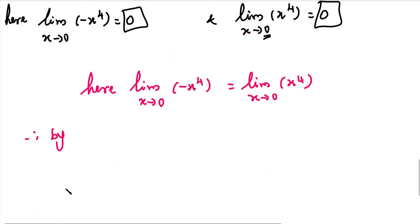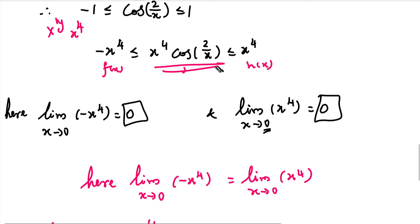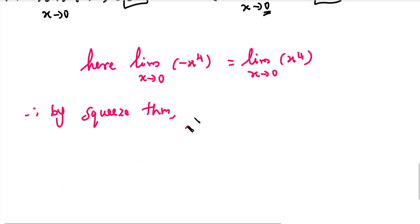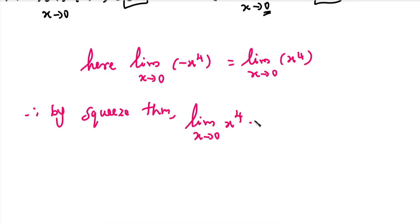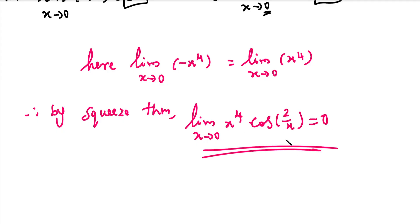Therefore, by the Squeeze Theorem, the middle function also has a limit value of 0. That is, limit x tends to 0 of x⁴ · cos(2/x) = 0.